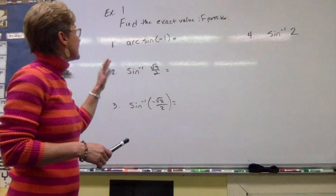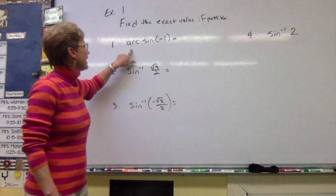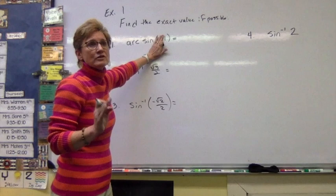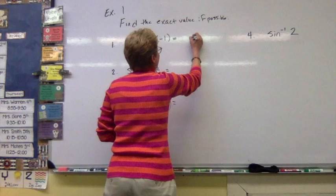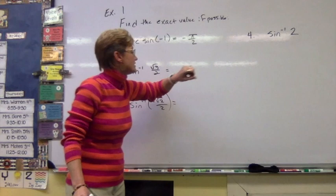Let's find exact values for these inverse sine functions. For arc sine of negative one: don't focus on the negative first. What is the first quadrant angle where sine is equivalent to one? Sine equals one at pi over two, then we add that negative. That falls between our parameters of negative pi over two and pi over two. For number two: the first quadrant angle where sine equals square root of three over two is pi over three.